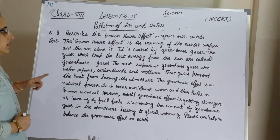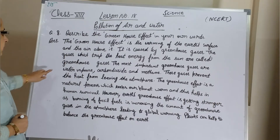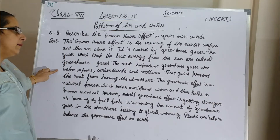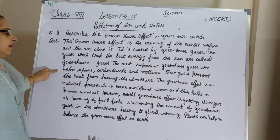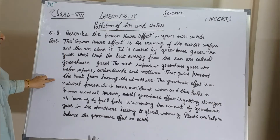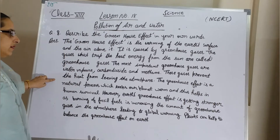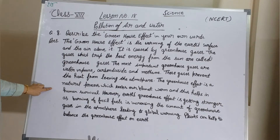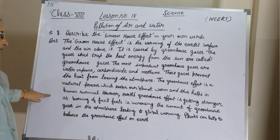The most important greenhouse gases are water vapor, carbon dioxide, and methane. These gases prevent the heat from leaving the atmosphere. The greenhouse effect is a natural process which keeps our planet warm and thus helps in human survival.